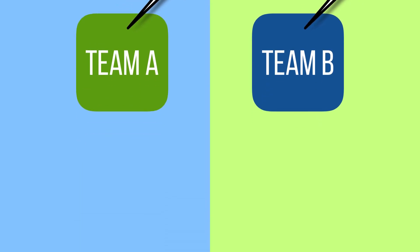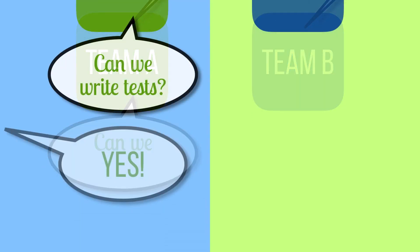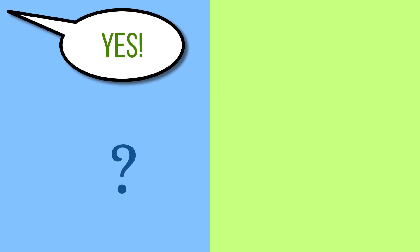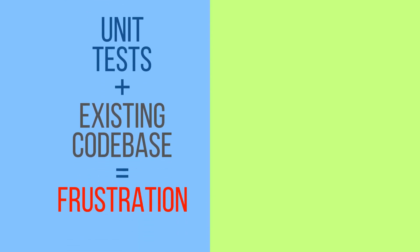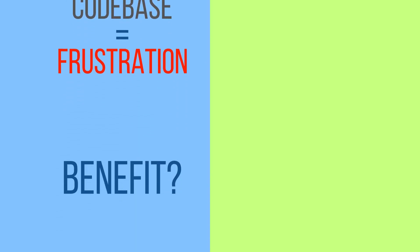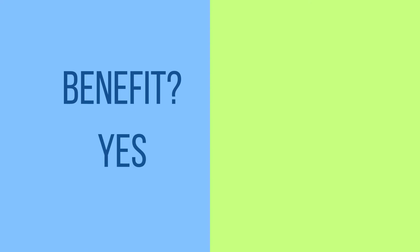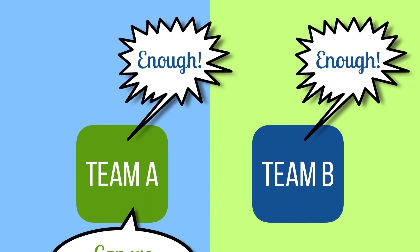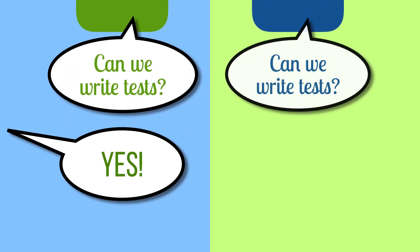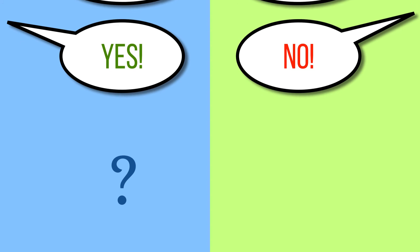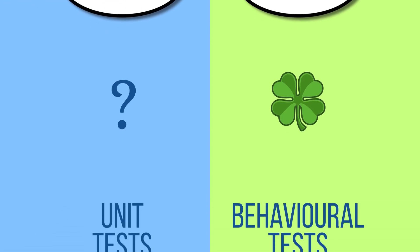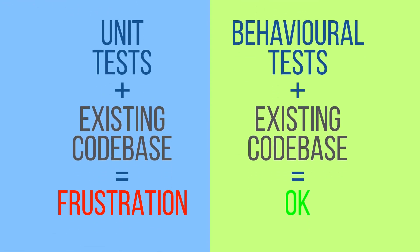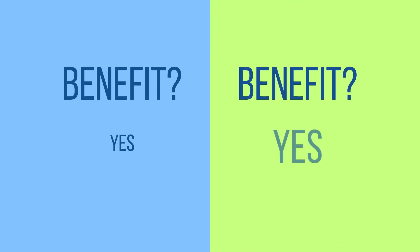Team A was right to call timeout. It would be harsh to say the product owners were wrong — they could hardly be expected to know that it's really difficult to write unit tests for an existing code base. Did the new unit tests deliver benefit? Yes. Was the benefit significant? No. Team B was also right to call timeout, and the business owners were oh so wrong to say no. The business owners were very lucky that the team wouldn't take no for an answer. The existing code base was challenging, so the decision to write behavioural tests was a very good one. Did the new behavioural tests deliver benefit? Yes. Was the benefit significant? Absolutely.